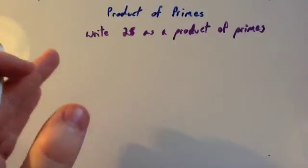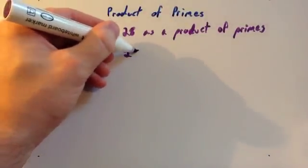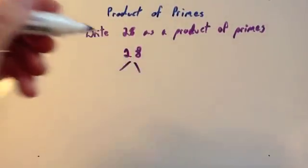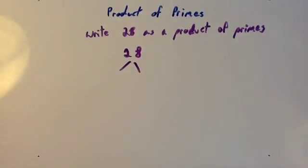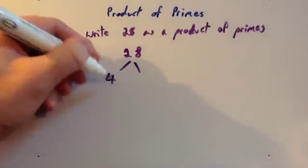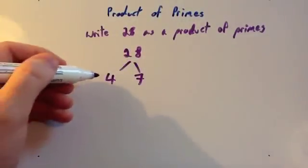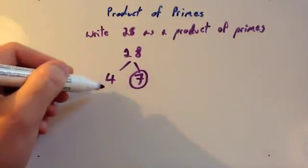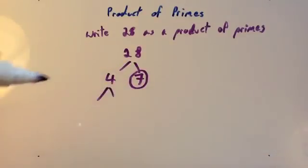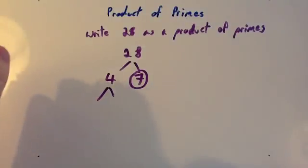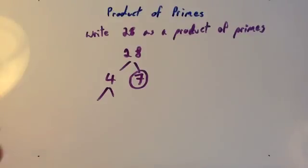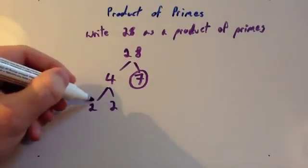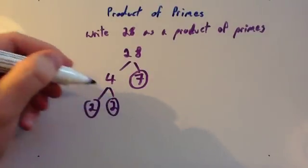The next question says: write 28 as a product of primes. So we start with 28, and think of two numbers that times together to give you 28 — 4 times 7. 4 times 7 is 28. 4 is not prime, so you don't circle that, but 7 is, so circle your 7. 4 is not prime, so think of two numbers that will times together to give you 4. Don't choose 4 and 1, because that just gives you 4 again. Think of two different numbers — here we've got 2 times 2. 2 is prime, so circle it. And 2 is prime, so circle it.